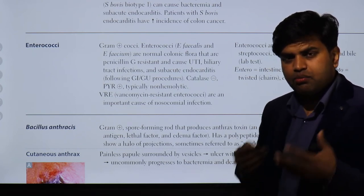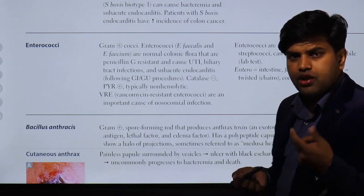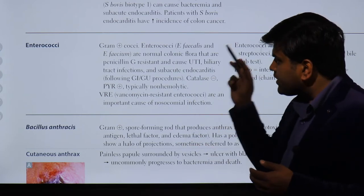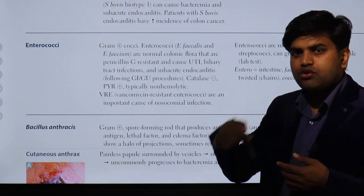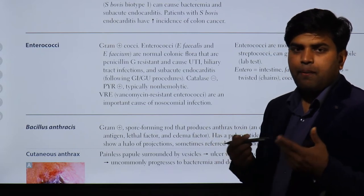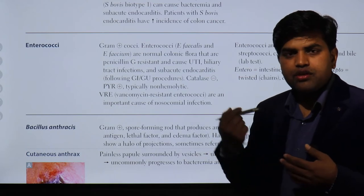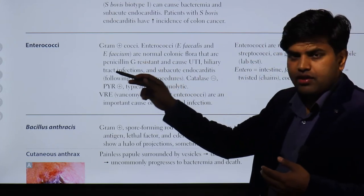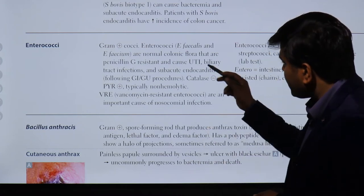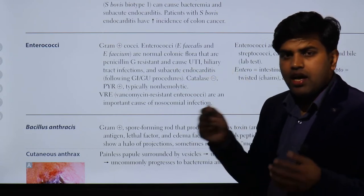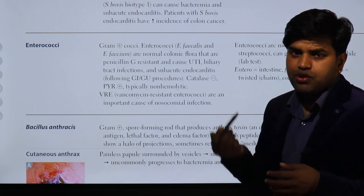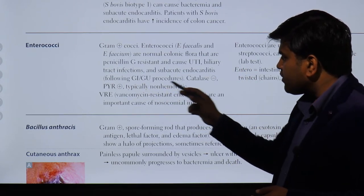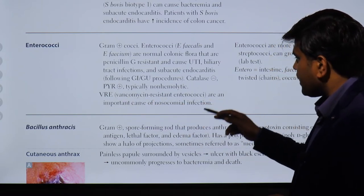Post-surgical procedures, placing a catheter, or any instrumentation in the urethra or ureter can introduce enterococci into a sterile site. Endoscopy or ERCP can seed these organisms into the blood through the genitourinary or gastrointestinal system, leading to UTI, biliary tract infection, and subacute infective endocarditis. They are catalase negative, typically non-hemolytic. Importantly, there is vancomycin-resistant enterococci (VRE), which is an important cause of nosocomial infection.